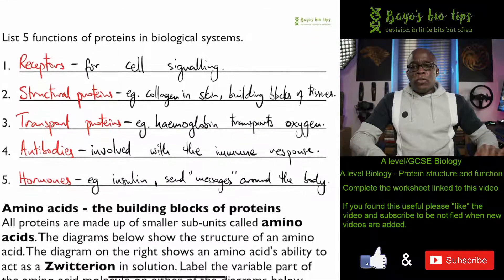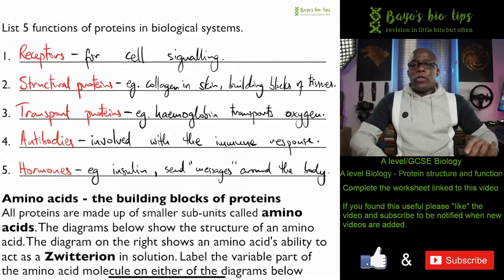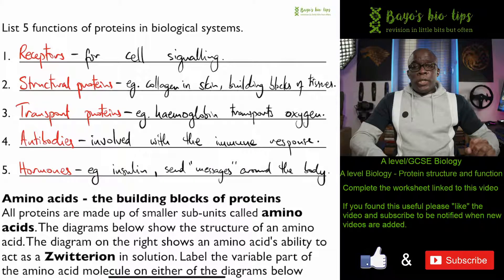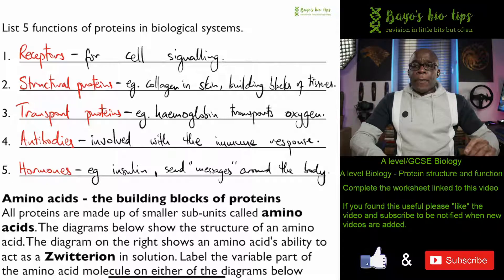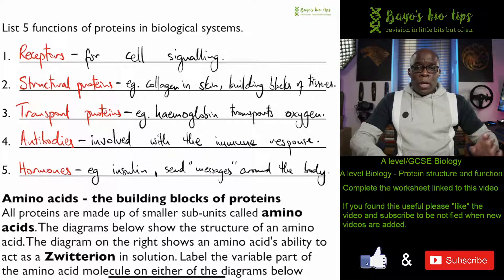Some examples of functions of proteins: they can be receptors for cell signaling. They can act as structural proteins — for example collagen in skin and as building blocks of tissues. They can act as transport proteins, so for instance hemoglobin has a heme group attached which enables it to bind to oxygen temporarily and transport it around the body. Some proteins act as antibodies, playing a vital role in the immune response, and some proteins are hormones — for example insulin — which send chemical messages around the body.